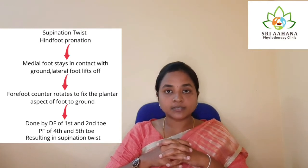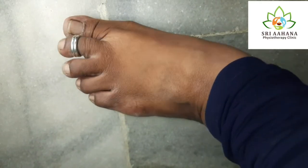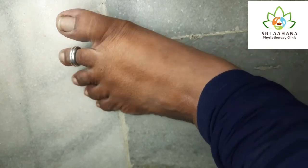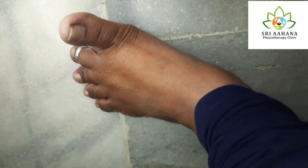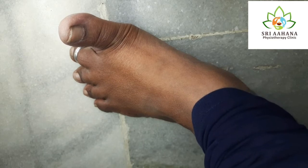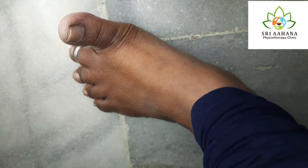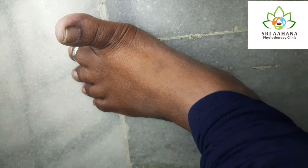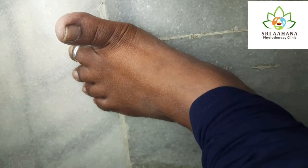Now let's look into what happens during supination twist. In the weight bearing portion, when the hind foot goes in for pronation, the forefoot has to supinate to some extent with the dorsiflexion of the great toe and the second toe, and plantar flexion of the fourth toe and the fifth toe with the support of ground reaction force. This will stabilize the plantar aspect of the foot in contact with the ground. This movement is called supination twist, that is the moment occurring at the forefoot.